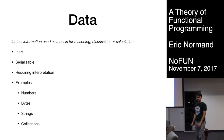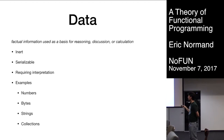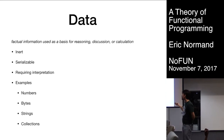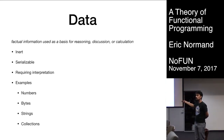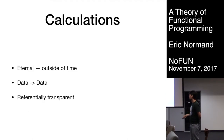Next: data. The definition: factual information used as a basis for reasoning, discussion, or calculation. It's a really nice definition. One thing about data is it's inert — it doesn't do anything on its own. But it's serializable, in general. And it requires interpretation; it can't run on its own.